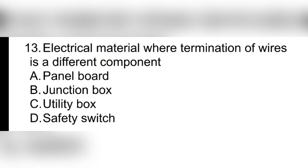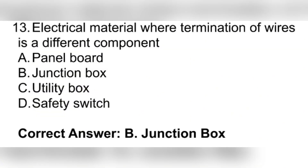Question 13. Electrical material where termination of wires meets a different component. A. Panel board. B. Junction box. C. Utility box. D. Safety switch. Correct answer: B. Junction box.